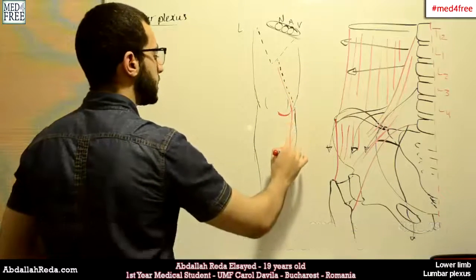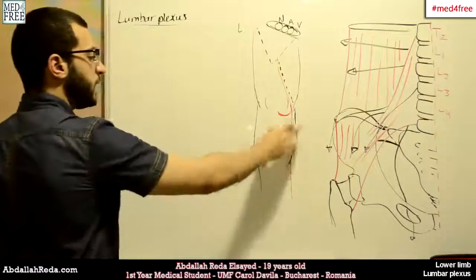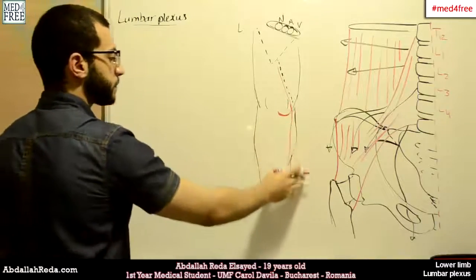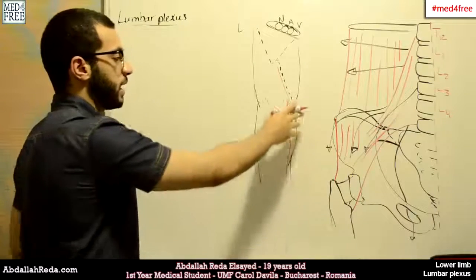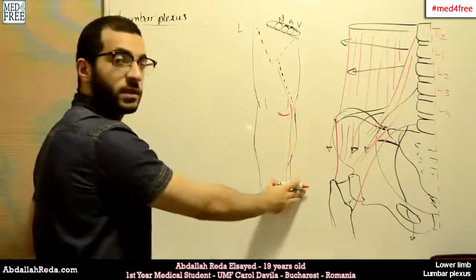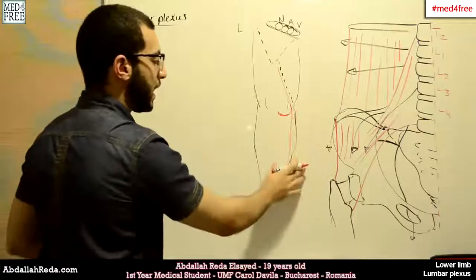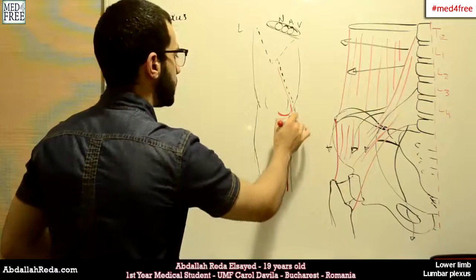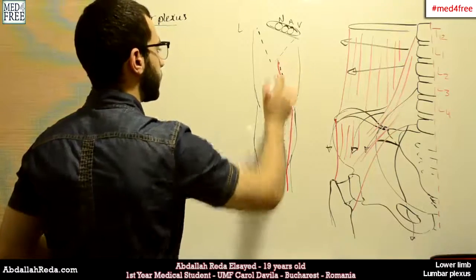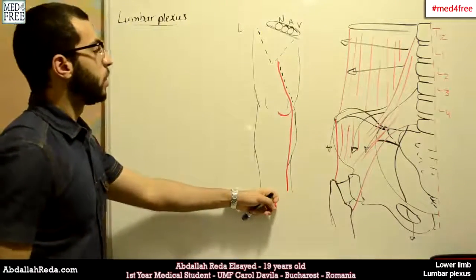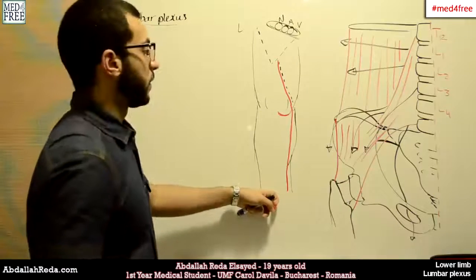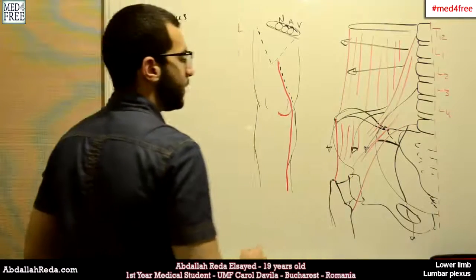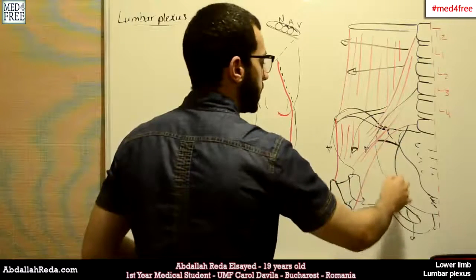The femoral nerve then descends through the leg and changes its name to the saphenous nerve. It accompanies the great saphenous vein, following the same course and destination.